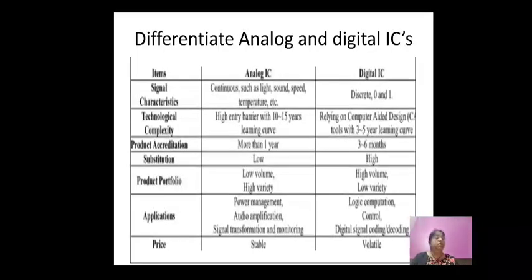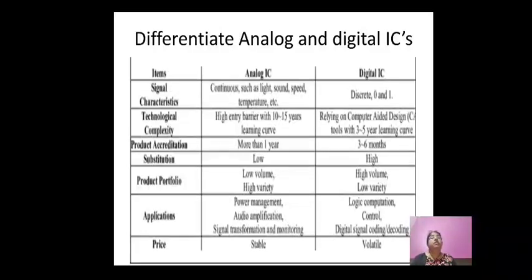Assignment questions on integrated circuits: Question 1 — What is an analog integrated circuit? List any four advantages and disadvantages of integrated circuits. Question 2 — Differentiate analog IC and digital IC. Question 3 — Classify integrated circuits. With this, we have completed Unit 4: Electronic Components and Signals. Thank you.